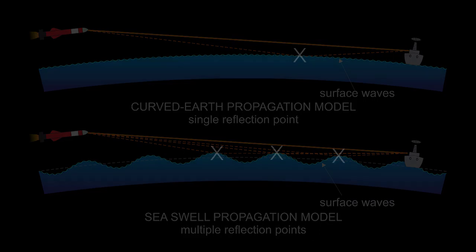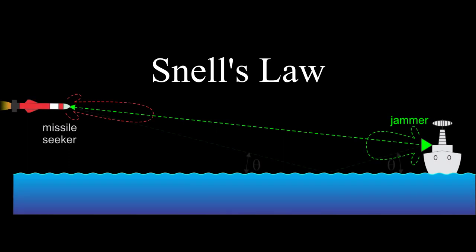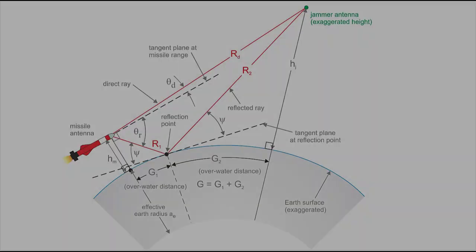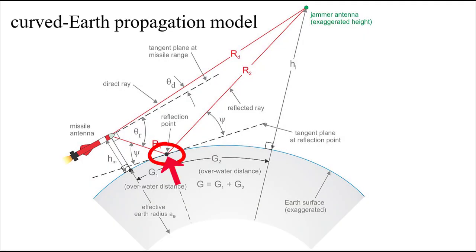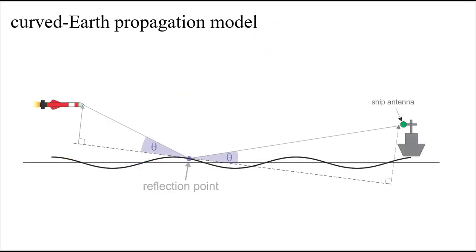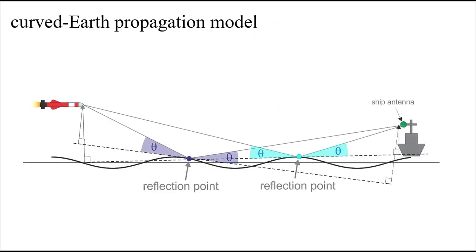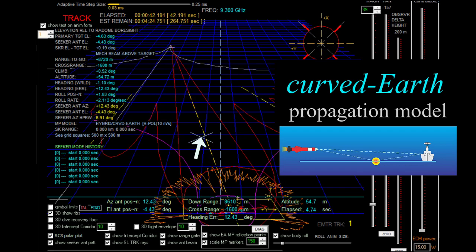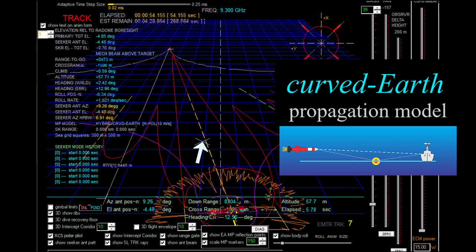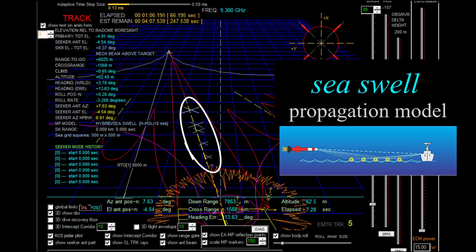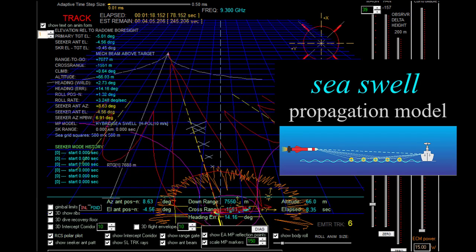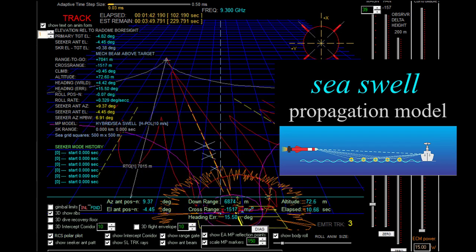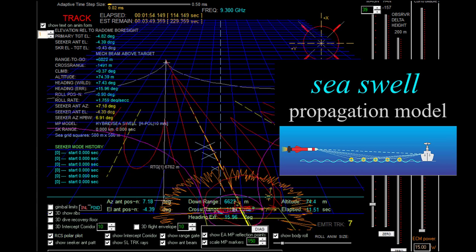In a ray tracing model, the specular reflection point is determined by Snell's law — it occurs where the angle of incidence equals the angle of reflection. On a sphere, that's satisfied at only one point. But if the sea surface is represented by a sinusoid wrapped onto the sphere, there are multiple crests and troughs, so there can be multiple reflection points. Here's what the reflection point looks like for a curved Earth model — a single white X on the sea surface — and here's what the reflection points look like for a sea swell model, where the size of each X is proportional to the amplitude of the reflection coefficient at that point.